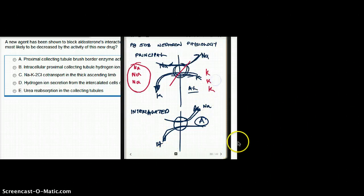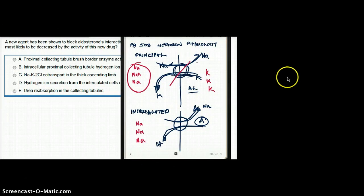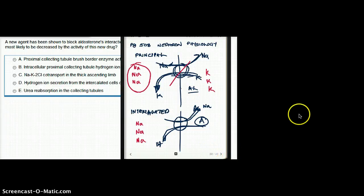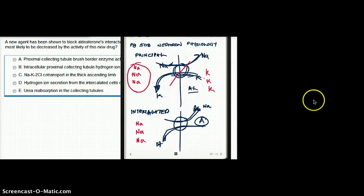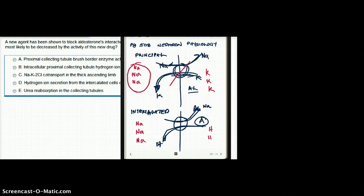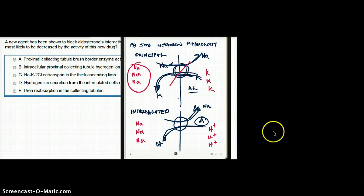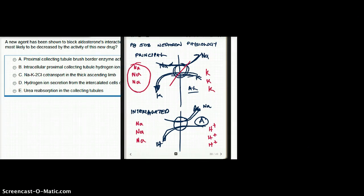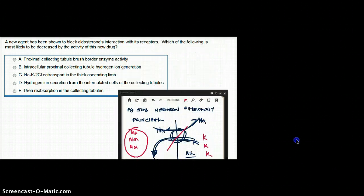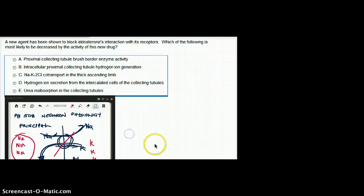When aldosterone is missing from the system, we have more sodium in the tubule. We have less potassium in the tubule and more in the plasma, and less hydrogen in the tubule and more in the plasma. As a result, the secretion of potassium or hydrogen is going to be decreased when we have an aldosterone blocker.